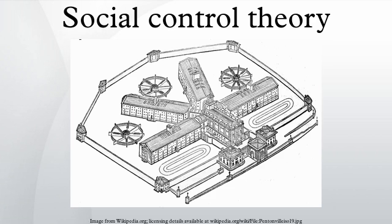It derives from functionalist theories of crime and was developed by Ivan Nye, who proposed that there were four types of control: direct, by which punishment is threatened or applied for wrongful behavior and compliance is rewarded by parents, family, and authority figures; and internal, by which a youth refrains from delinquency through the conscience or superego.